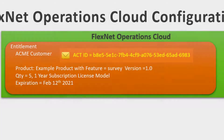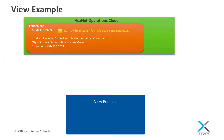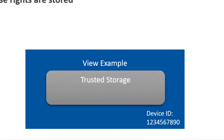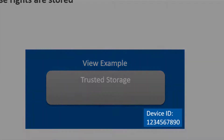Now let's take a look at the function of the view example provided in the toolkit. First, it will create what is called trusted storage, if it does not yet exist. Trusted storage provides a secure location where encrypted license rights are stored on the target device. Trusted storage and the licenses contained in trusted storage are tied to a device ID. A device ID is a unique identifier for the device that will be licensed.